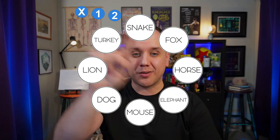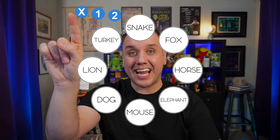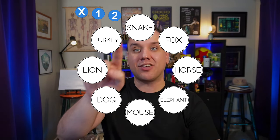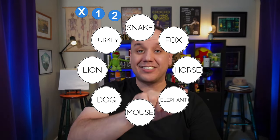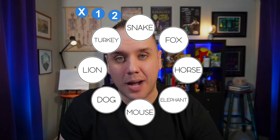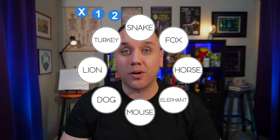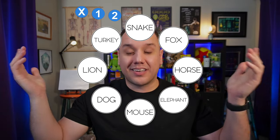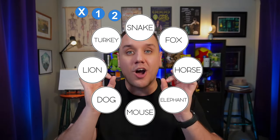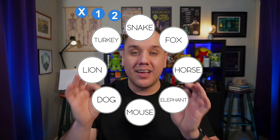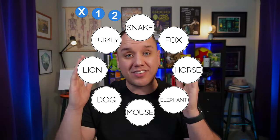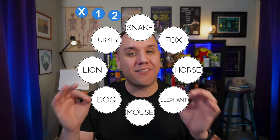So whatever your number is, I want you to start on that little X, and I want you to count around these circles in this direction. If you get all the way back to the top, just keep going in this direction around the animals until you get to your number, ignoring these little blue circles at the top. So go ahead, start counting to your number now. Count around the circles until you get to your number, and when you get to your number, I want you to stop on that animal. If you're still counting and you need more time, you can pause the video, but hopefully at this point, you have landed on one of the animals.